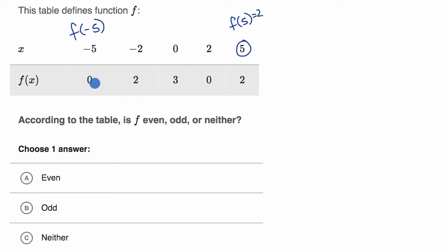f of negative five, not only is it not equal to two—it would have to be equal to two if this was an even function, and it would be equal to negative two if this was an odd function—but it's neither. We very clearly see, just looking at that data point, that this can neither be even nor odd.